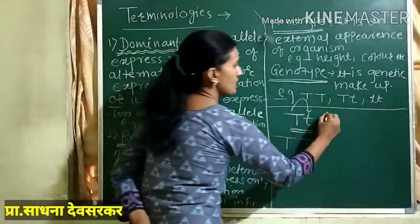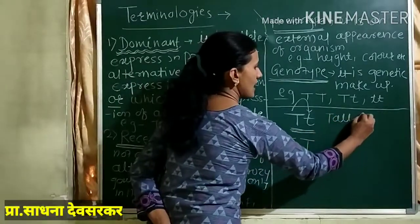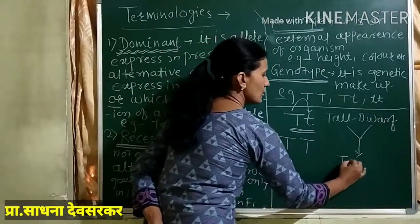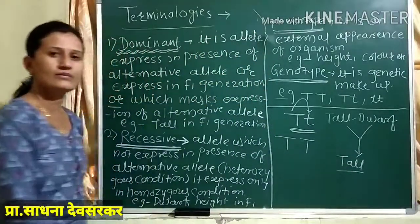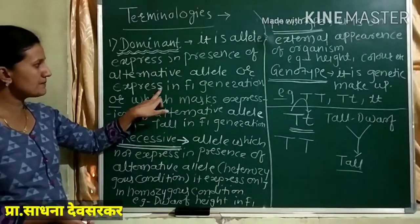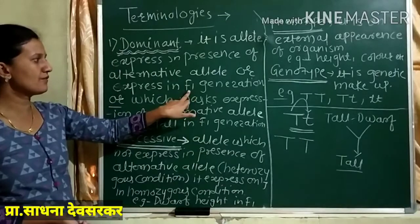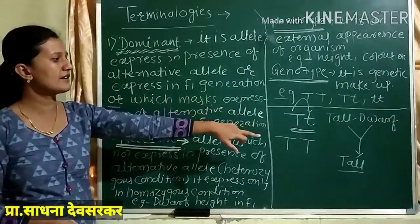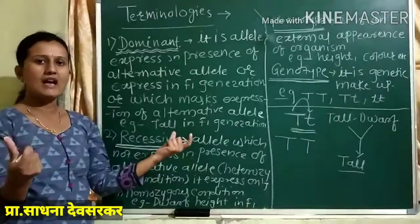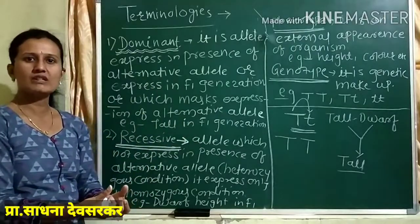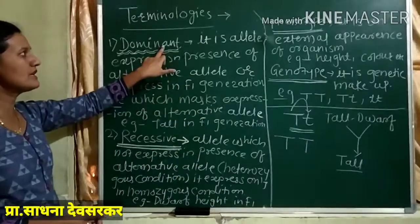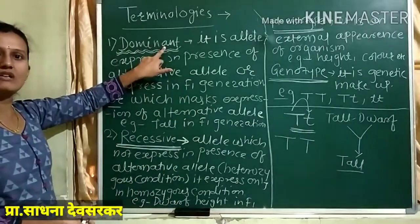Suppose a cross between tall and dwarf produces — the tall parent produces cross-pollination results. The character, the allele, which is expressed in F1 generation: if a cross between tallness and dwarfness of a plant results in offspring with tall height, that means tallness is the dominant character.